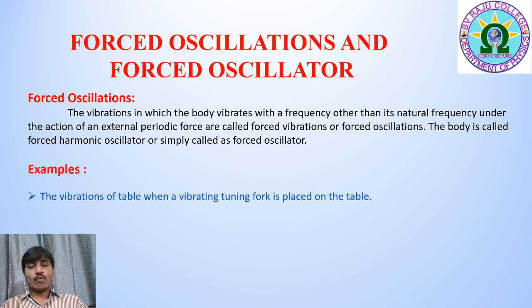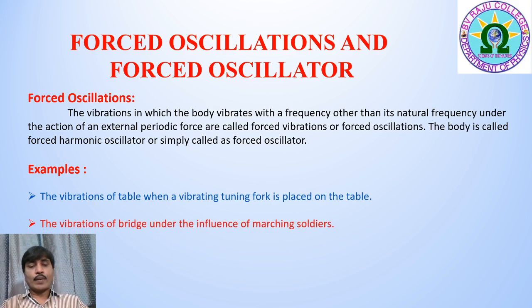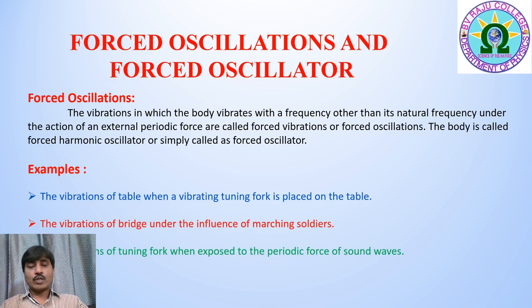The first example is the vibrations of a table when a vibrating tuning fork is placed on it — the table vibrates with the frequency of the tuning fork, so those vibrations are forced vibrations. The second example is the vibrations of a bridge under the influence of marching soldiers — the bridge vibrates with the frequency of the marching soldiers, so those are also forced vibrations.